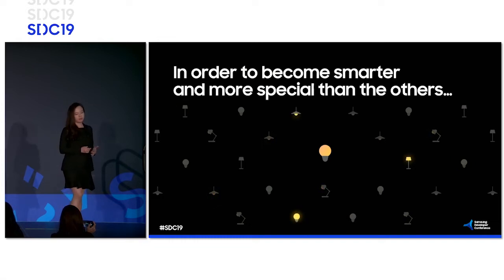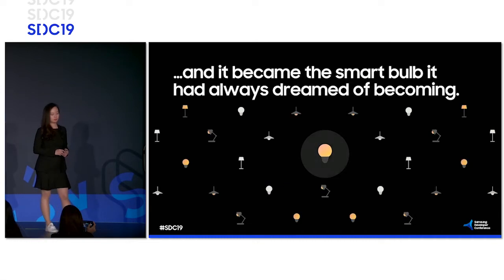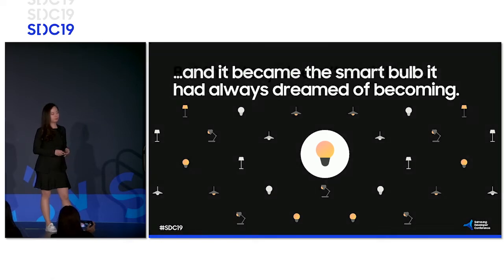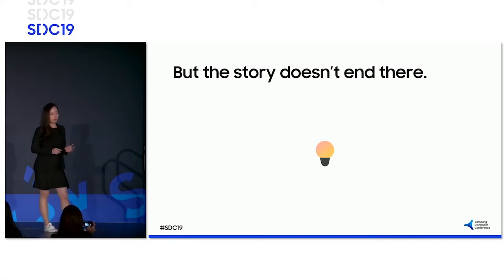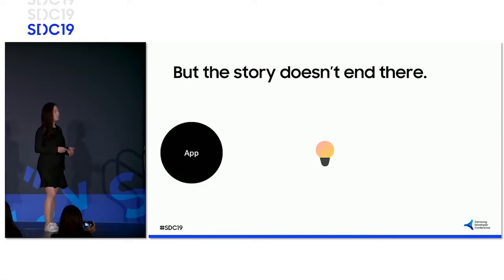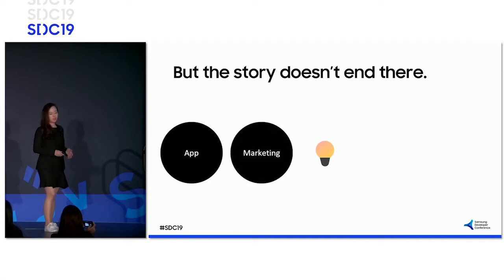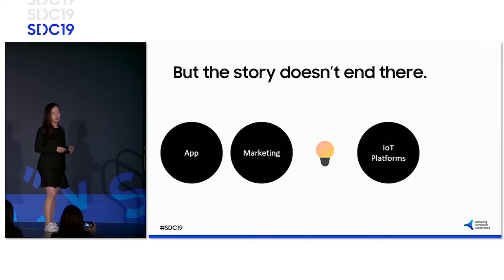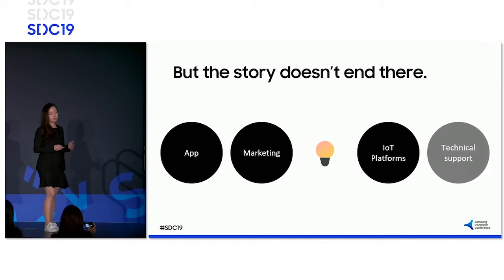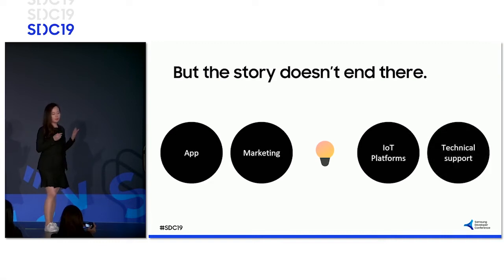This made our bulb very unique, and our customers loved it. That's how Brightlight became the smart bulb it always dreamed of becoming. But the story doesn't end there — now our team at Brightlight needs to create an app to control the smart bulb and start marketing from scratch. In order to become a more major player in the world of IoT, we will need to bridge partnerships with major IoT ecosystems and platforms and provide the needed technical support in order to be added. Becoming a part of an ecosystem designed by another entity can be a bit tricky.